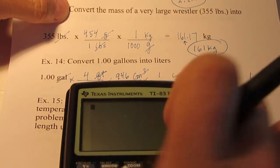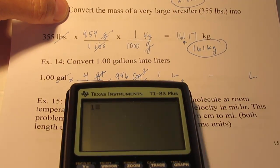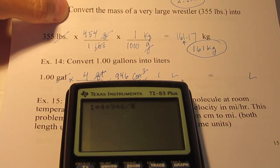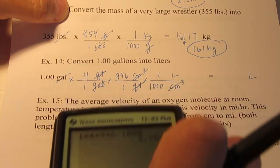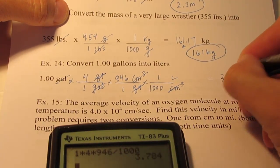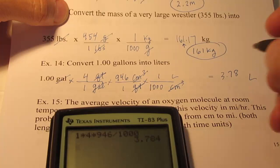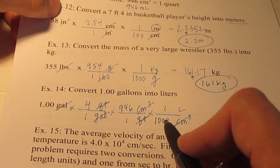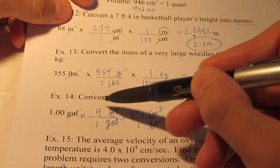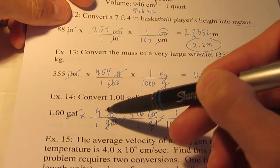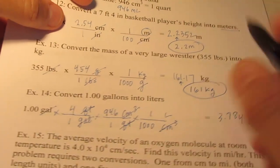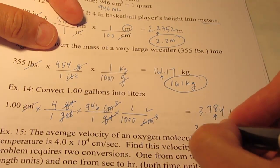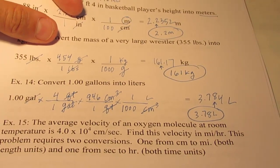So here we go. We have one gallon times four times 946 divided by a thousand. And I end up with 3.784. So let's see, infinite sig figs here, three sig figs here, this is the definition four quarts in a gallon so that's infinite, and I have 3 sig figs here. So I can round my answer off to 3 sig figs. I'm going to call that 3.78 liters are in a gallon.